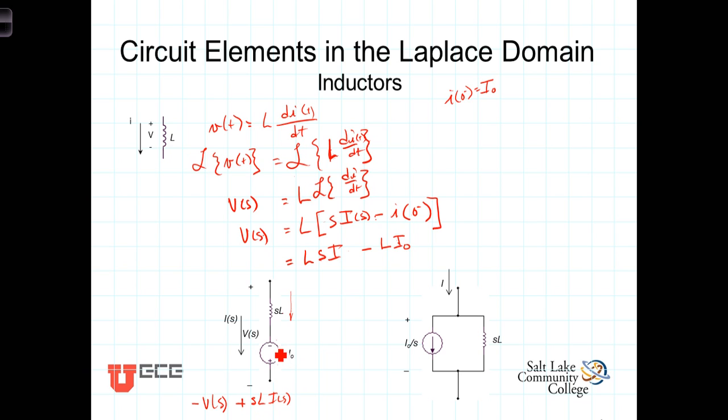Then we have the minus to plus, so that would be minus L I naught equals 0. Bringing V of S to the other side, we have exactly what we've got here. V of S equals Ls times I of S minus L I naught.